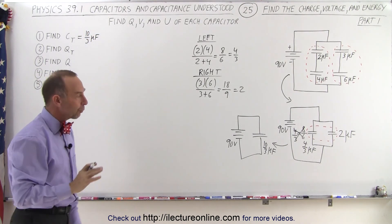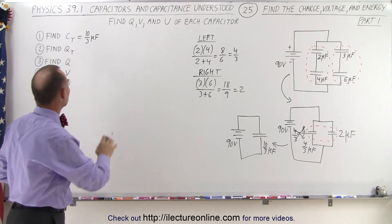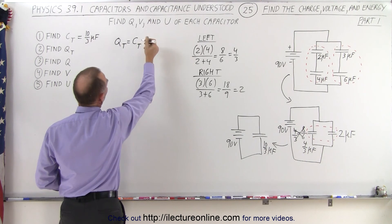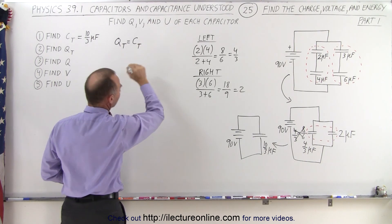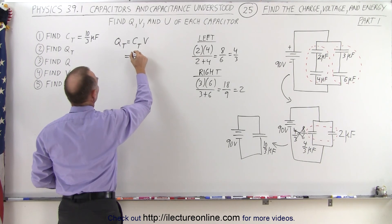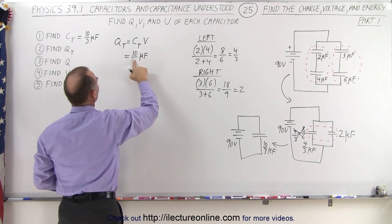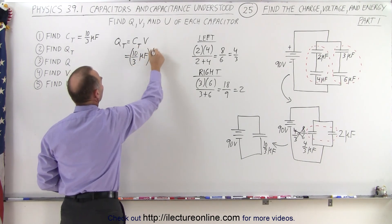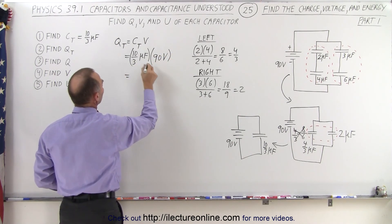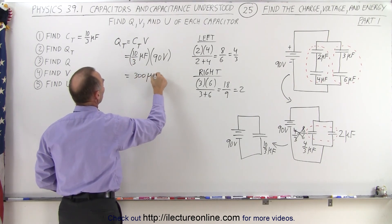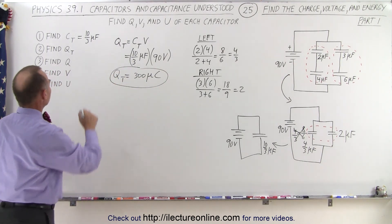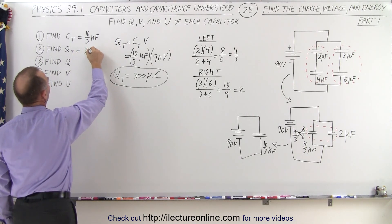Once we've found the equivalent capacitance of the circuit, we can now calculate the total charge. Q total is equal to C total times the voltage across it — Q equals C times V. Since we have the total capacitance of 10 over 3 microfarads, we multiply times the voltage source of 90 volts. 3 goes into 90 thirty times, so this becomes 30 times 10, or 300 microcoulombs. That is the total charge on the equivalent capacitor.